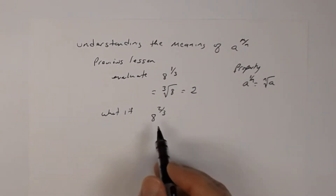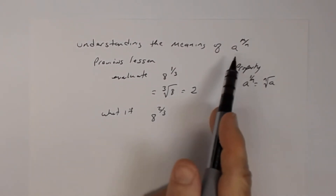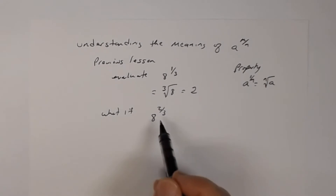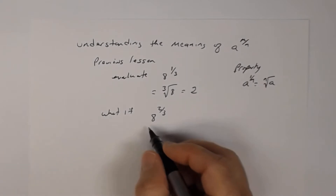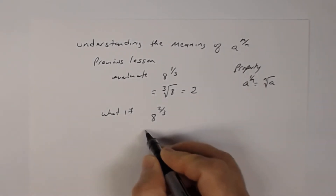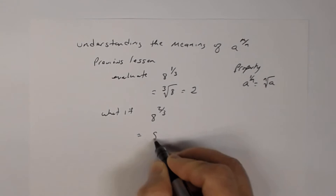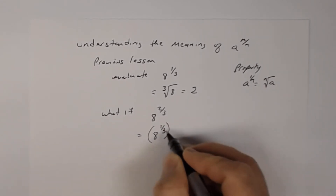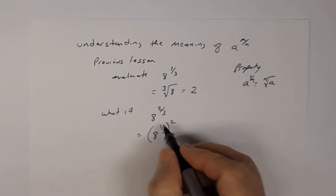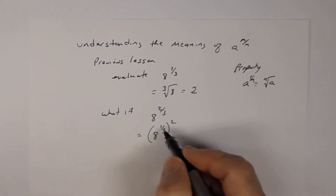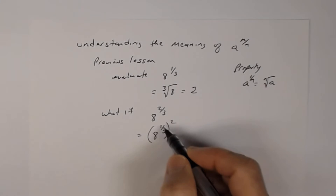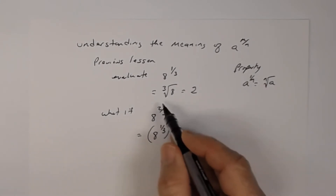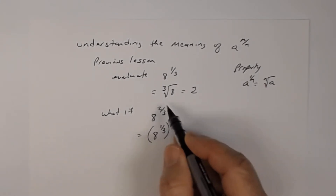Before we come up with a rule, I want to rewrite this expression. You know that according to our properties for exponents — the power rule — I can write 8 to the 2/3 as 8 to the 1/3, all raised to the 2nd power. When you have a power raised to a power, you multiply: 1/3 times 2 is 2/3. All I did was take the numerator and write it out in front.